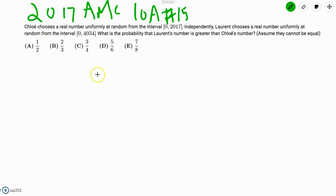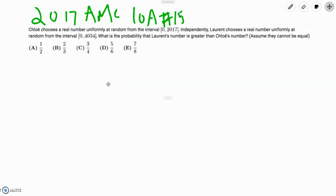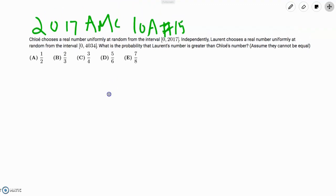Since we have infinite possibilities, we can't really do any sort of case work. But we have to somehow find a region, a probability region, where Laurent's number is greater than Chloe's number, and then find that region over the area of the whole region.